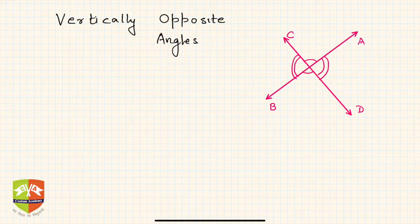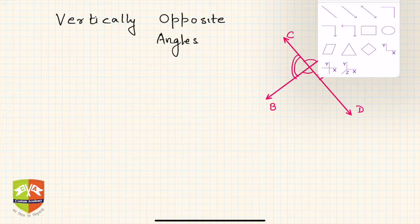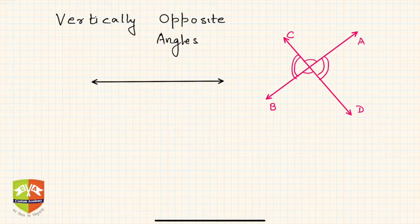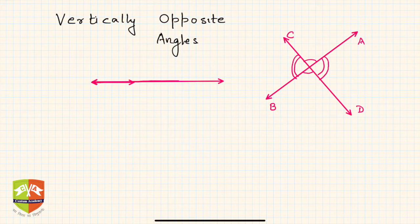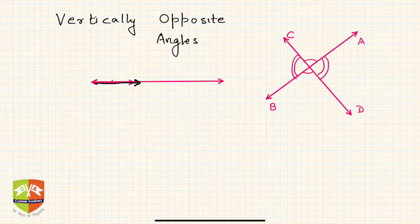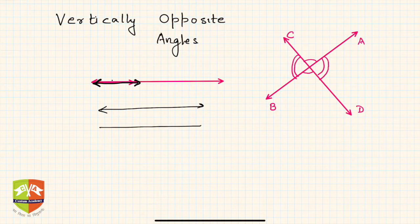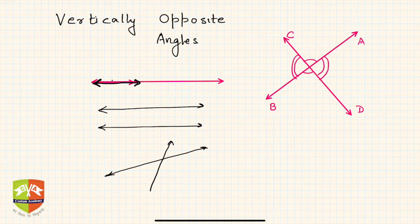When we talk about straight lines, two straight lines have three options on a plane. One is they can be coincident on each other. Another possibility is two lines are parallel. The third possibility is they intersect on the same plane. Vertically opposite angles are generated when two lines intersect.